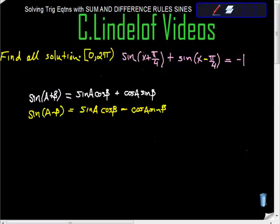We're asked to find all solutions from 0 to 2π of the equation sin(x + π/4) + sin(x - π/4) = -1.